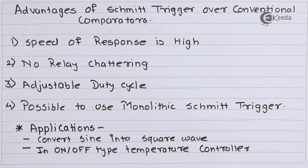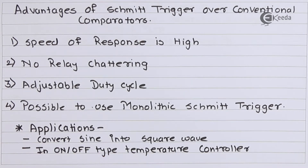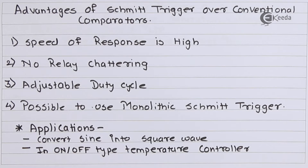The next advantage provided by Schmidt trigger is adjustable duty cycle. Schmidt trigger has two levels of triggering — the upper threshold level and lower threshold level. By adjusting these levels, we can achieve an adjustable duty cycle. Schmidt trigger is basically used to convert any type of waveform into a square wave, and by adjusting the triggering voltage levels, we can easily adjust the on and off period of the duty cycle, which is not possible in a conventional comparator circuit.